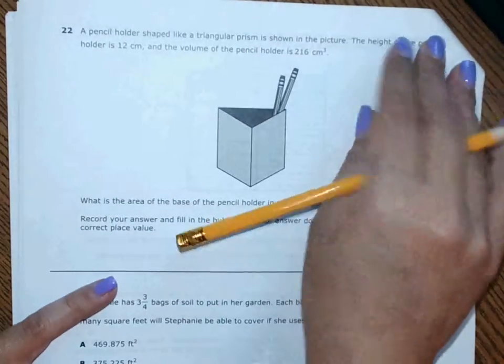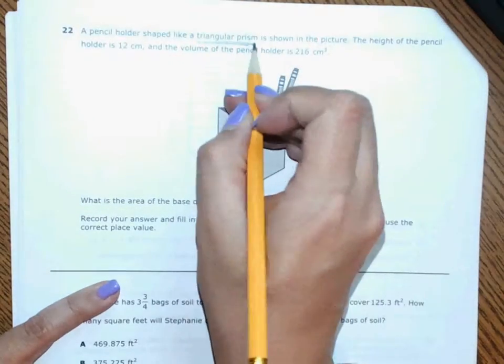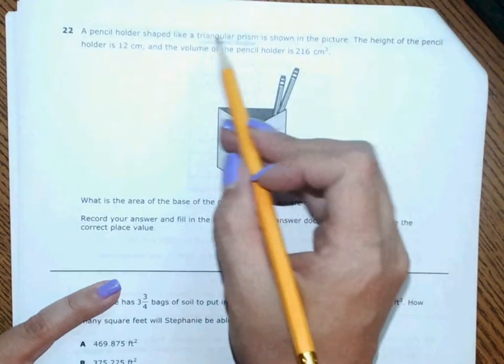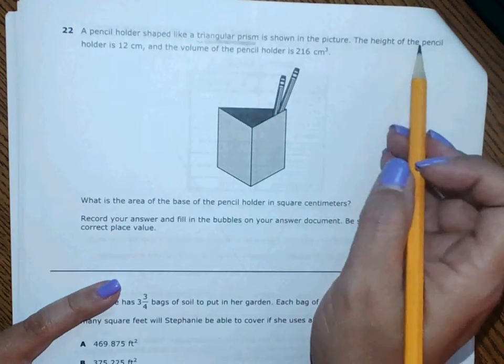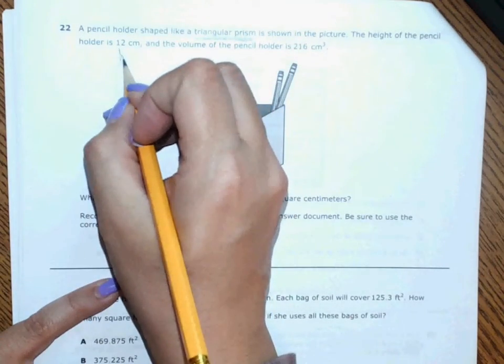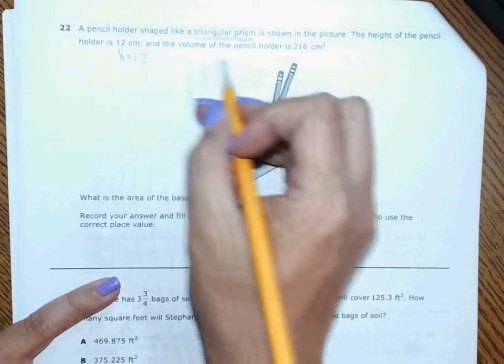A pencil holder shaped like a triangular prism - remember a lot of times I give you a picture and you typically don't have to guess what kind, it'll tell you in the words. It says the height of the pencil holder is 12 centimeters, so height is 12, so one of the H's is 12. And the volume of the pencil holder is 216.